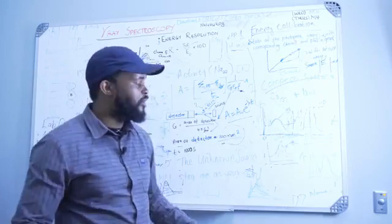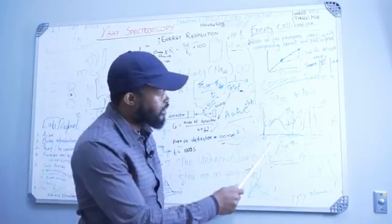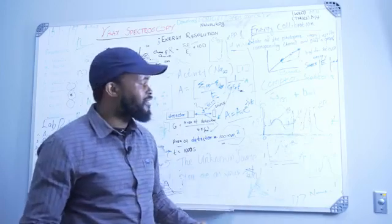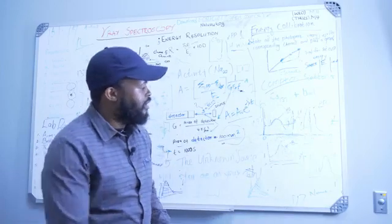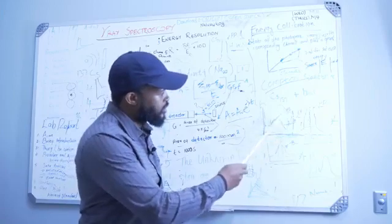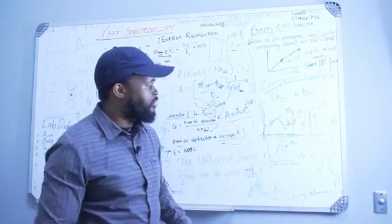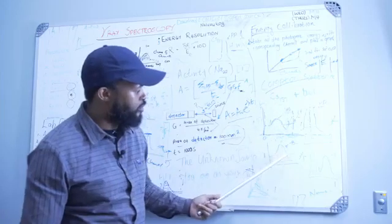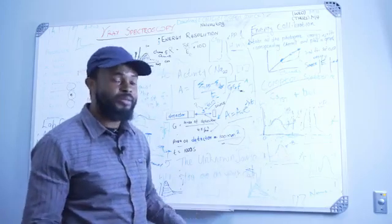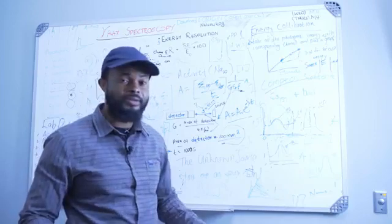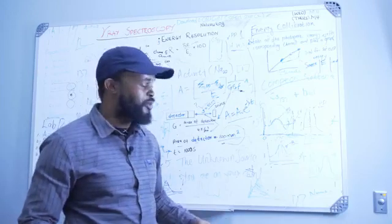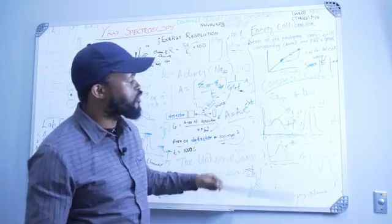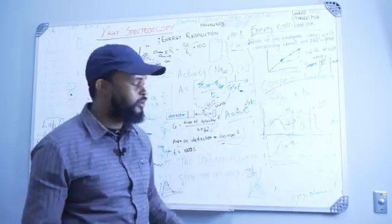Please make sure you identify the backscattered peak, the Compton edge, and the photopeak. For Caesium-137, I want you to zoom in on the backscattered peak section, plot it separately, and then do a Gaussian fitting. Also explain why it is important to do a Gaussian fitting on data. Make sure you answer the questions that are under this section in your manual. That will be the second part of your experiment.